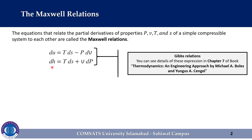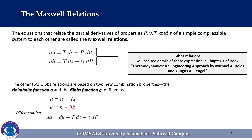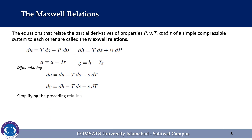In the second equation, h represents the enthalpy. The other two Gibbs relations are based on two new combination properties: the Helmholtz function a and the Gibbs function g, defined as a is equal to u minus ts, and g is equal to h minus ts. After differentiating, we get dA is equal to du minus T ds minus s dT, and dG is equal to dH minus T ds minus s dT. After simplifying using du equal to T ds minus p dv and dH equal to T ds plus v dp, we obtain the other two Gibbs relations for simple compressible systems.